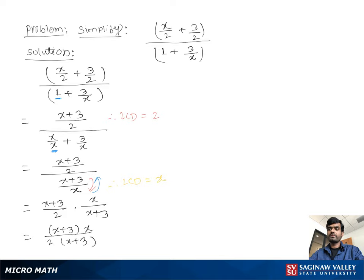The x plus 3 factors cancel out, and we get x over 2, where x is not equal to negative 3 and x is not equal to 0.